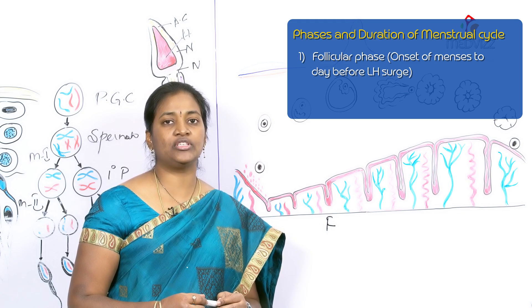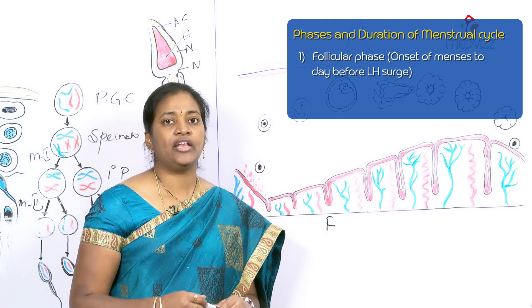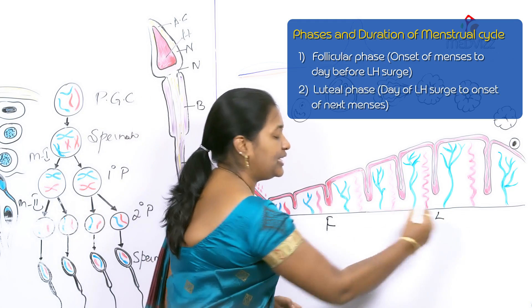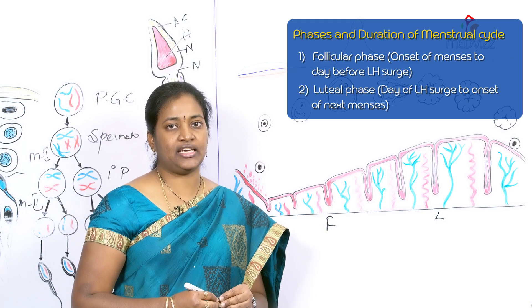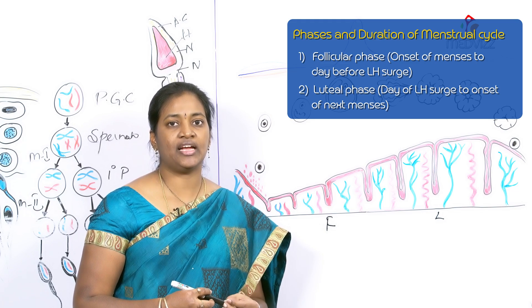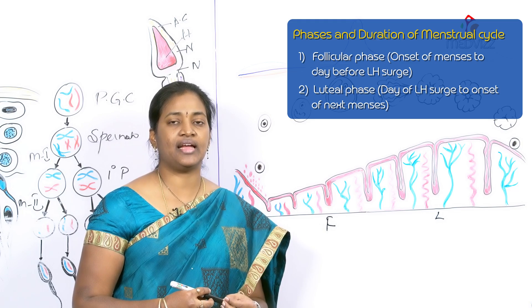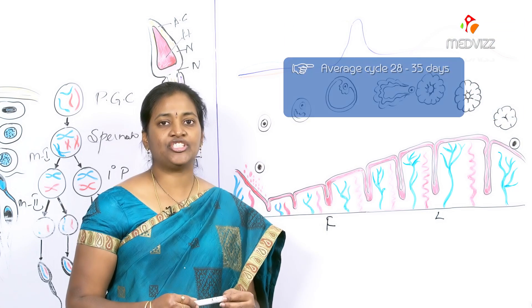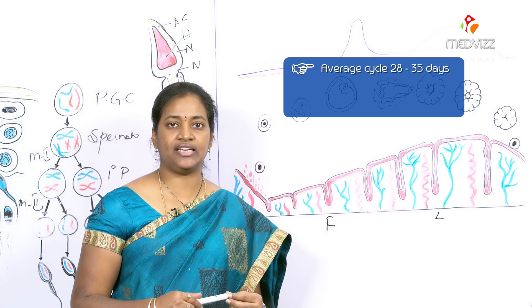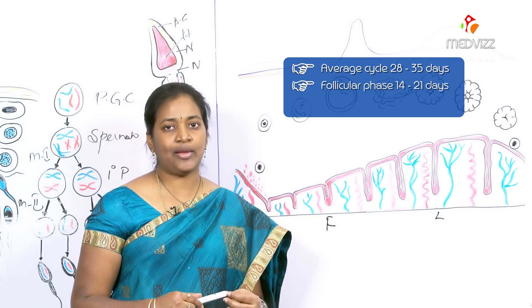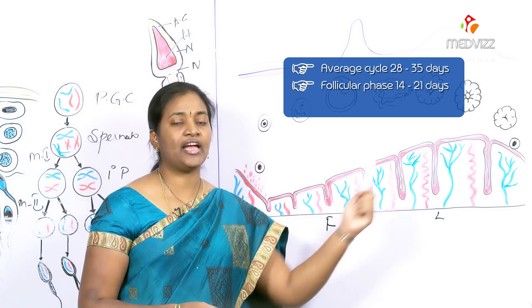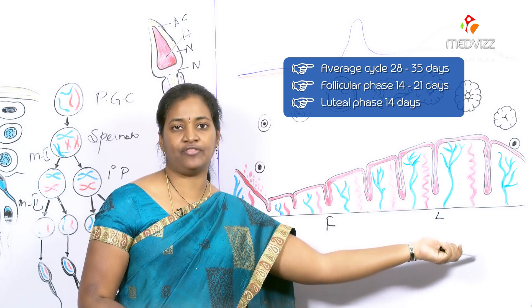The next is the luteal phase, which begins from the 14th day, depending on the LH surge, and ends at the next menses. The average adult menstrual cycle lasts 28 to 35 days, with approximately 14 to 21 days in the follicular phase and 14 days in the luteal phase.